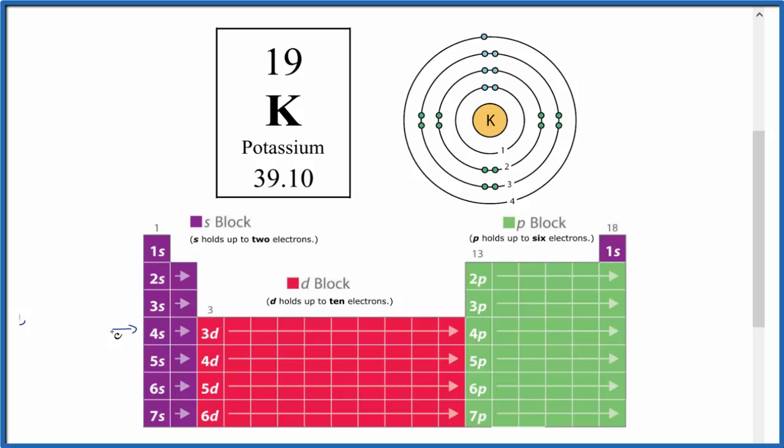We go to the fourth period. This is the fourth energy level. We only have 19. So here's our last one in this first group. This is where potassium is on the periodic table. We put that right here.